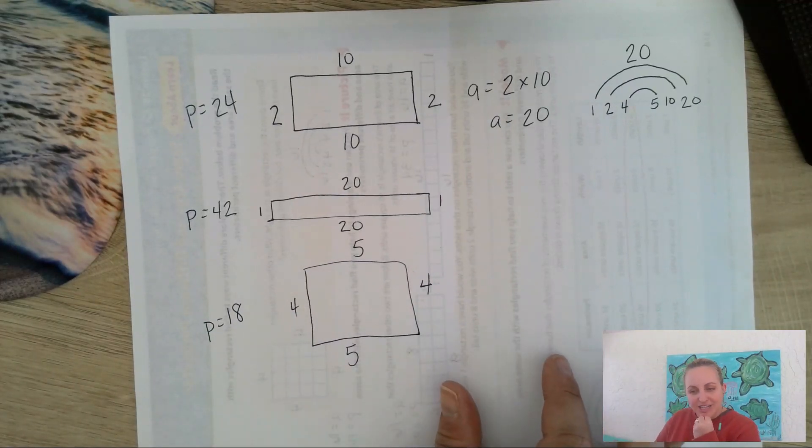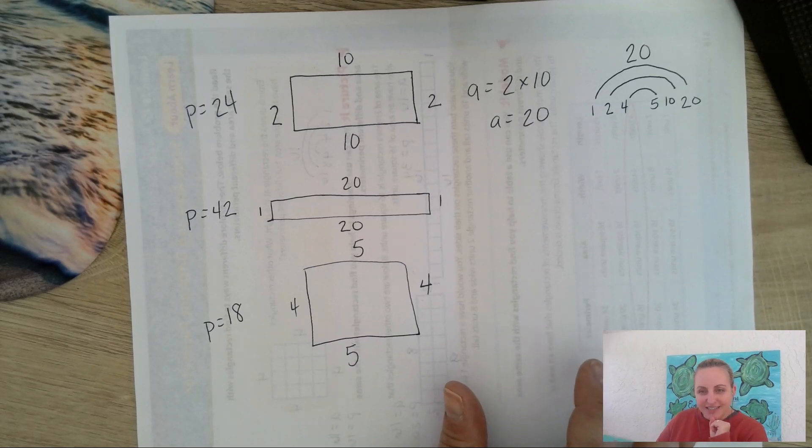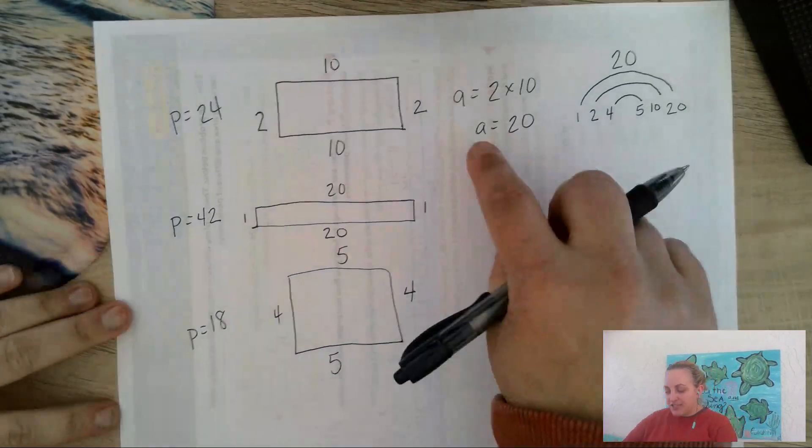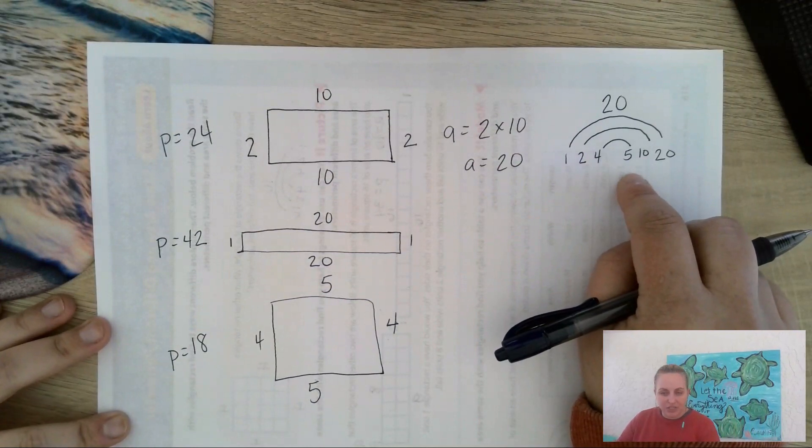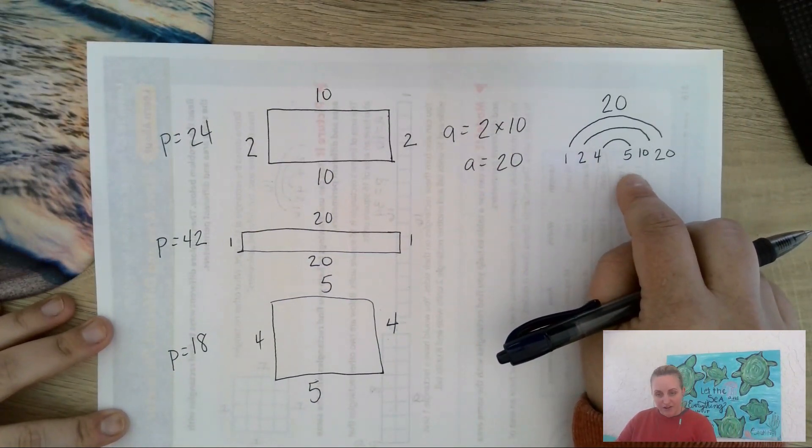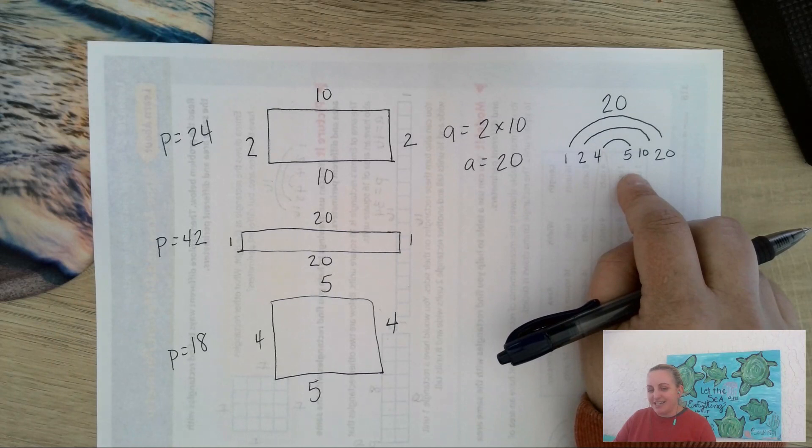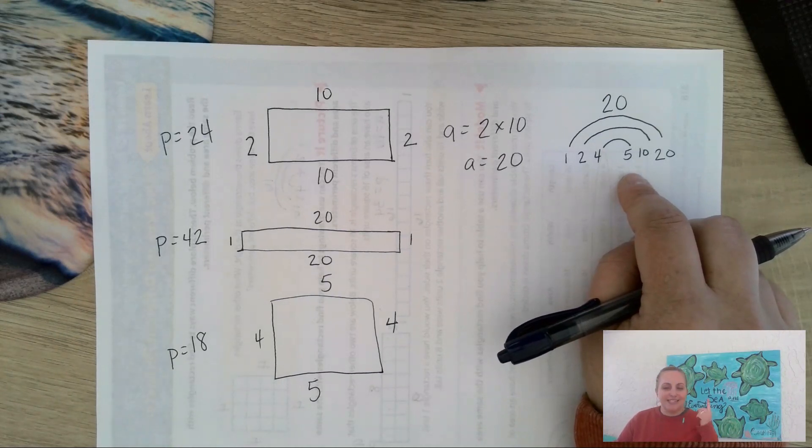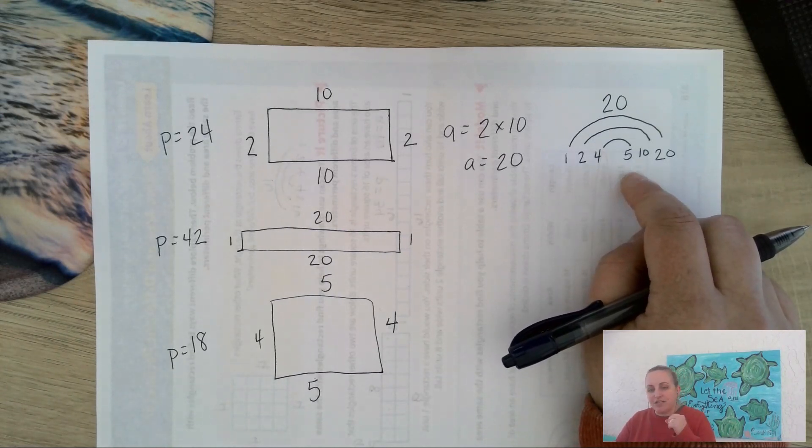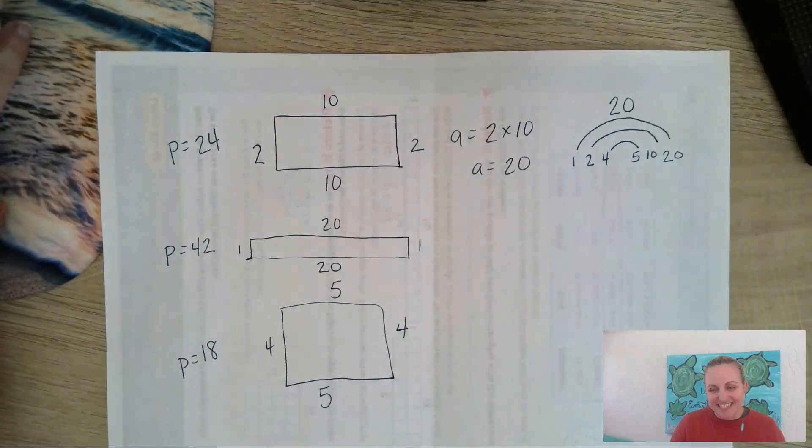So I want you to practice. Use your factors to help you out. This is how you're going to figure out what are the other ways you can arrange it. You're going to use your factors. And I will see you guys in the next video, where we are going to be looking at same perimeter, but different area. See you guys next time. Bye.